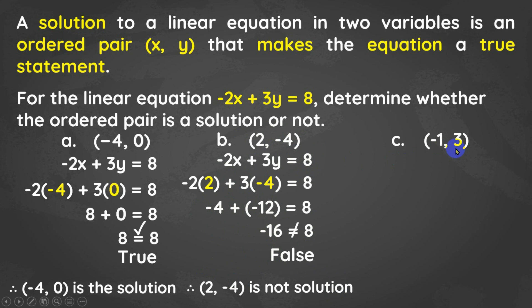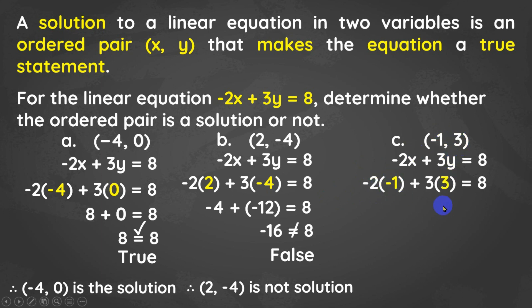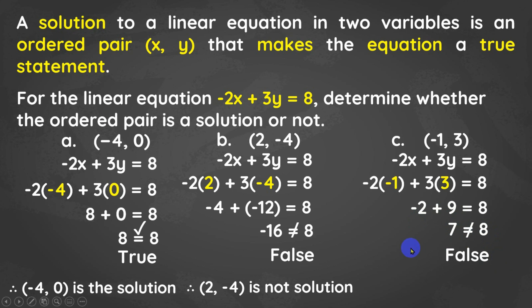The last ordered pair to test is negative 1 and 3. Substitute negative 1 to x and positive 3 to y: negative 2 times negative 1 is positive 2, and positive 3 times positive 3 is positive 9. Adding these two gives positive 11 — wait, we subtract absolute values: the answer is positive 7, which is not equal to 8. So the ordered pair negative 1 and positive 3 is also not a solution for the given linear equation in two variables.